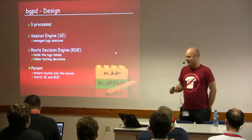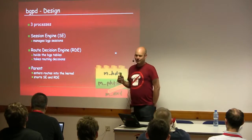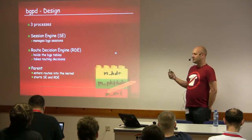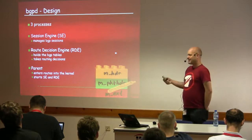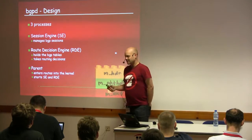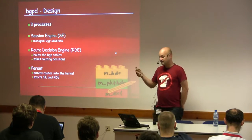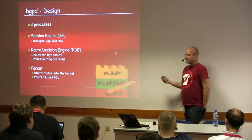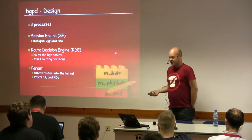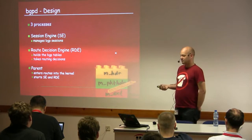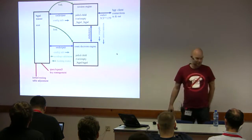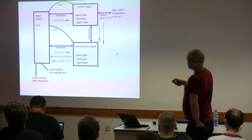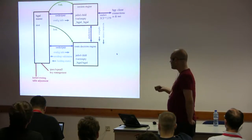BGP design: I did not want to use threads. We went for three processes. One I named the session engine, which is just responsible for dealing with TCP connections to other BGP speakers. It does not parse routing information — it passes that on to the route decision engine, which handles all the routing. There's also a parent process that talks to the kernel and starts the session engine and the RDE. That's the basic design.